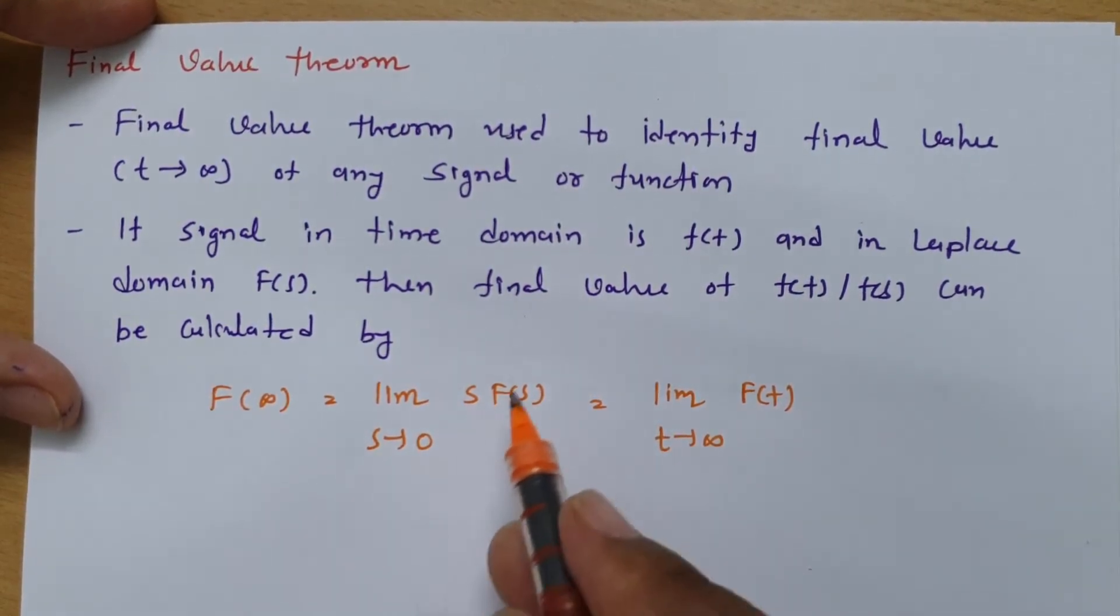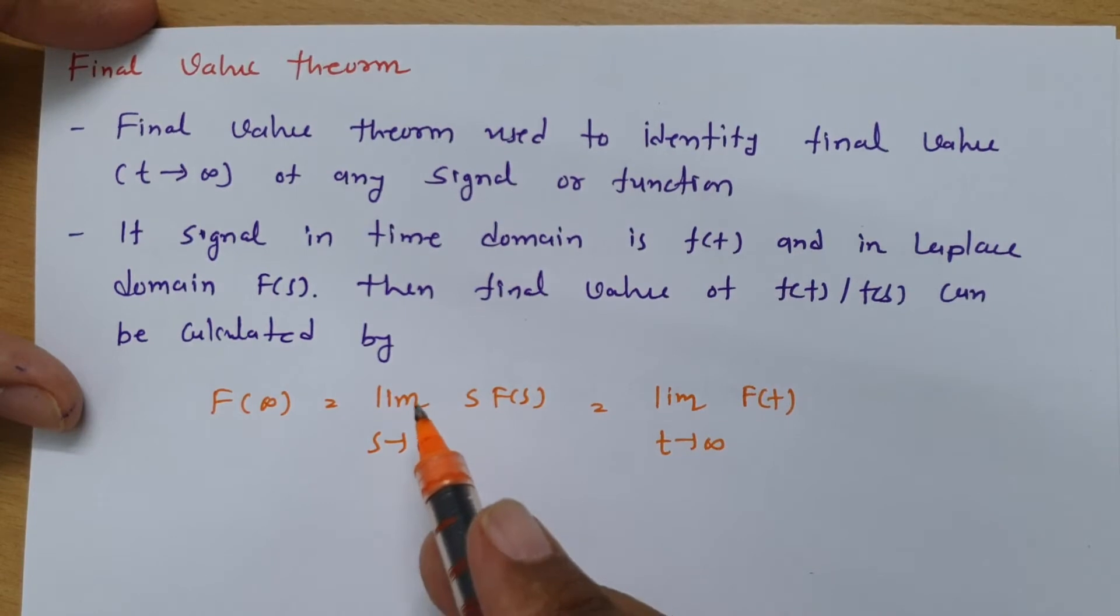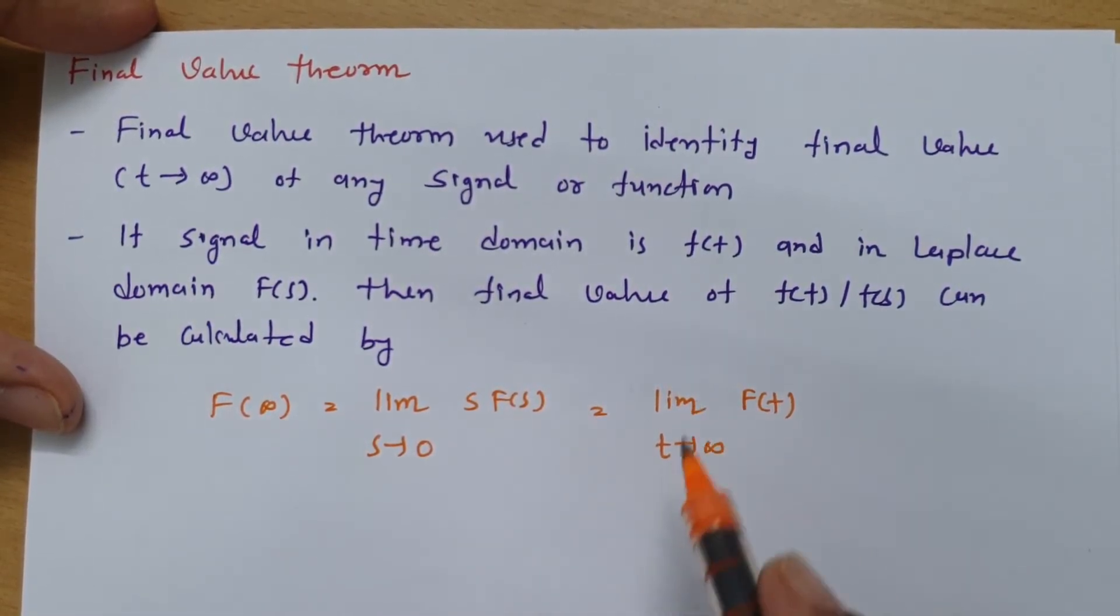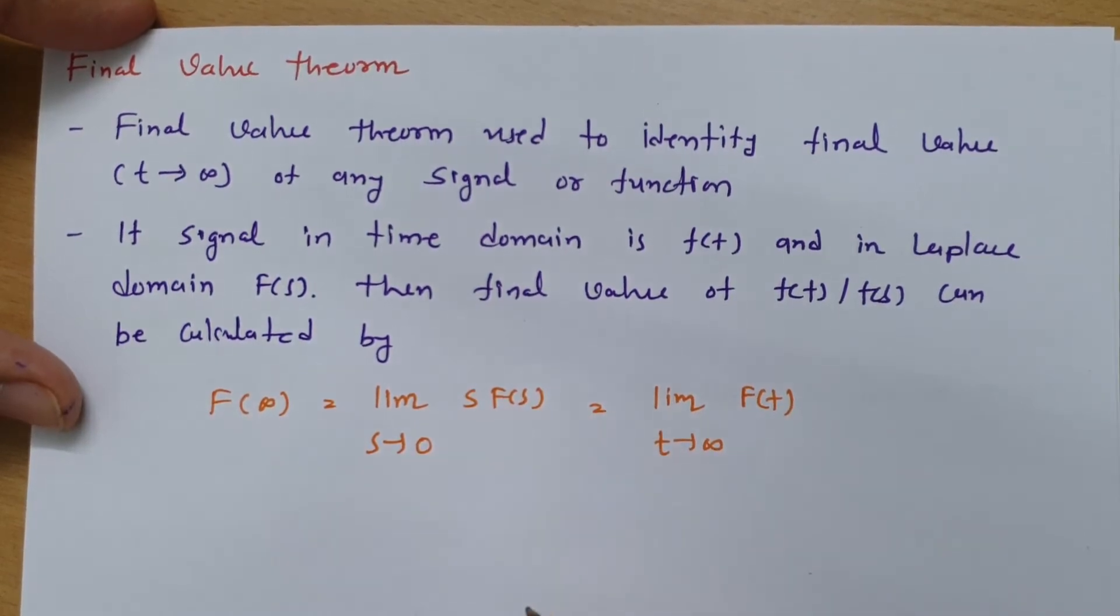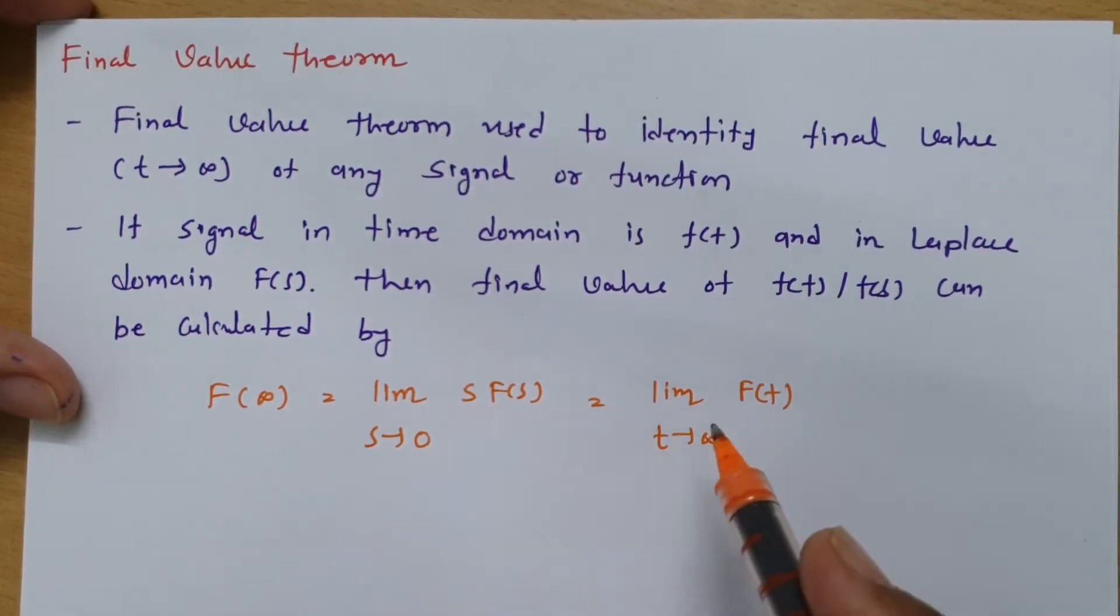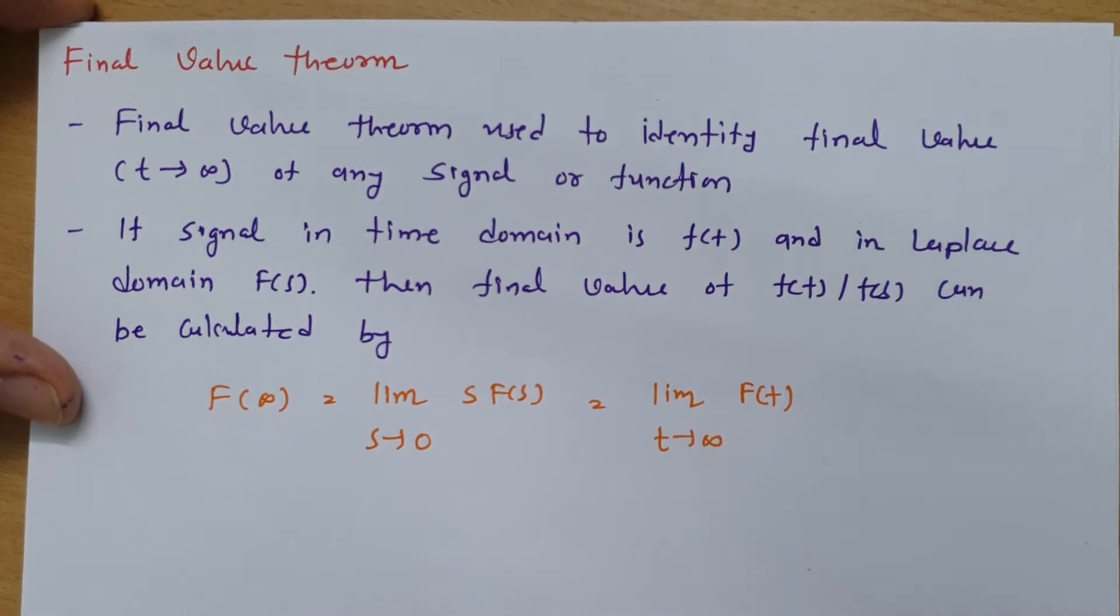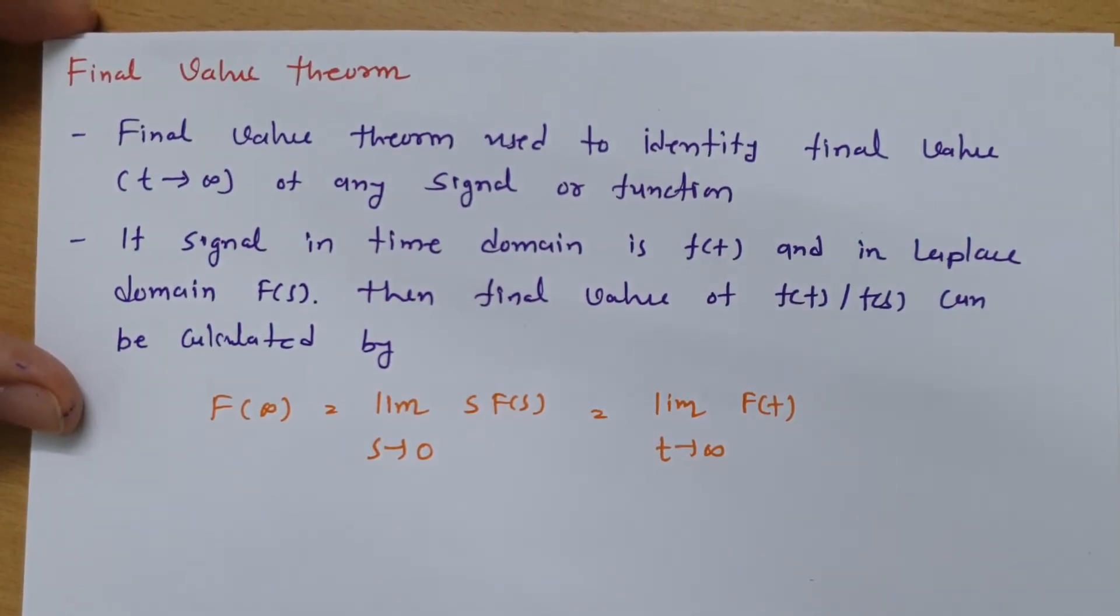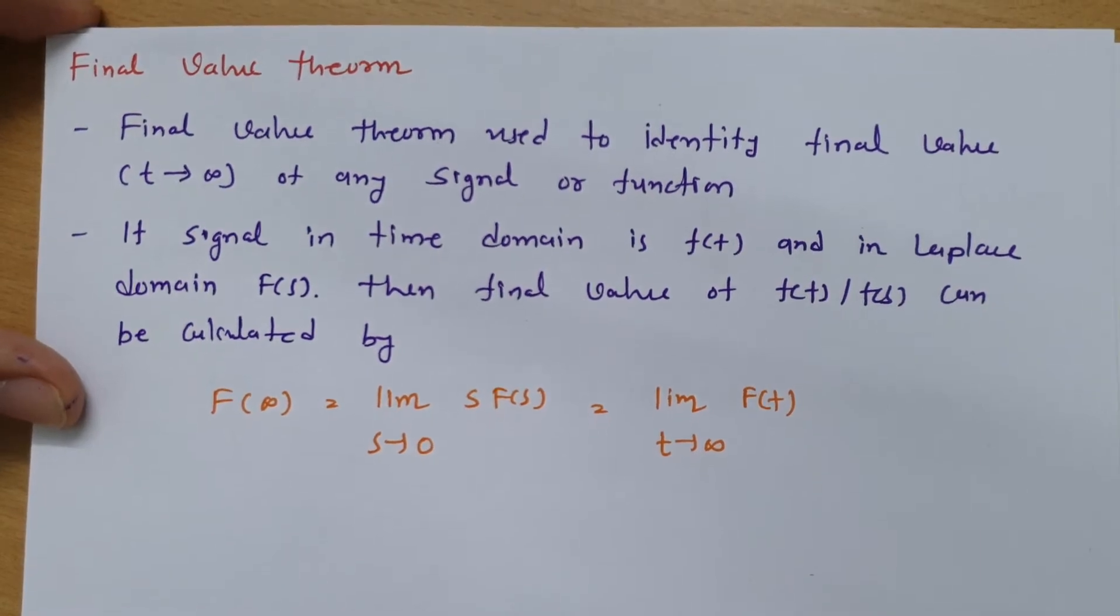So in Laplace domain we calculate it by limit s tends to 0 of s·F(s), and in time domain by limit t tends to infinite of f(t). This is how we can calculate final value of any signal or function. Now, to understand this better, let us have one example.